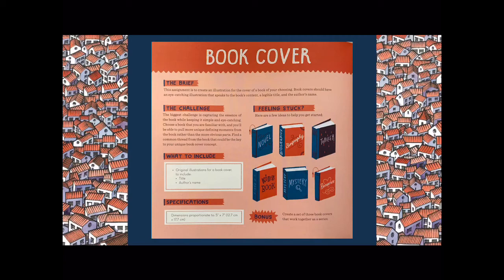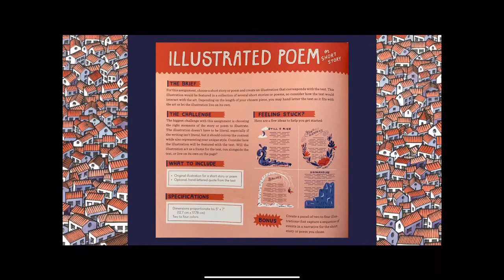Your second project option is to do an illustrated poem or short story. So if you didn't like the book novel idea, you can choose this one instead. For this assignment, choose a short story or poem and create an illustration that corresponds with the text. This illustration would be featured in a collection of several short stories or poems. So consider how the text would interact with the art. Now really you're not going to be putting it with other work, you're just going to be seeing this one thing. So just keep that in the back of your head. Now depending on the length of your chosen piece, you may hand letter the text so it fits with the art or you could just have it be a straight illustration with no text. The biggest challenge with this assignment is choosing the right moments of the story or poem to illustrate. The illustration doesn't have to be literal, especially if the writing isn't literal, but it should convey the content while also representing your unique style. Consider how the illustration will be featured with the text. Will the illustration act as a frame for the text, run alongside the text, or live on its own on the page?